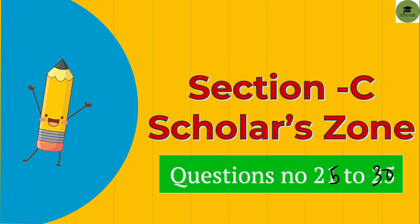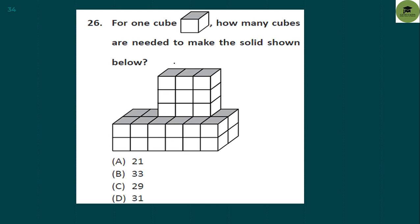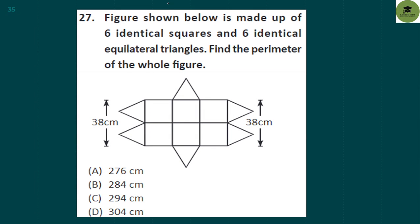Question 26 (Scholar Zone): for one cube, how many cubes are needed to make the solid shown in the figure? To make the figure solid, you calculate the cubes needed to fill it completely. The total number of blocks required to make this solid is 33.